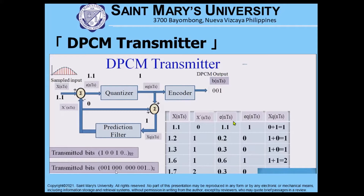Now to produce xq-NTS — the prediction filter input — we add the quantizer output of 1 to the prediction filter output, which is the predicted value of zero. So zero plus one equals one.